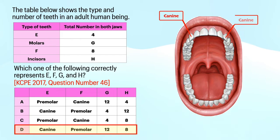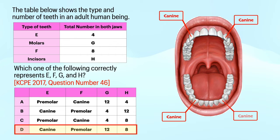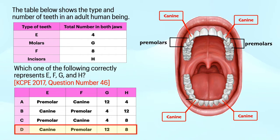The number of canines in both jaws of an adult human being are 4. The number of premolars in both jaws of an adult human being are 8.